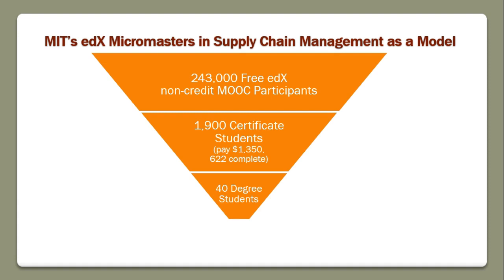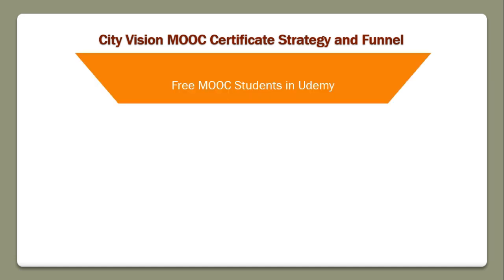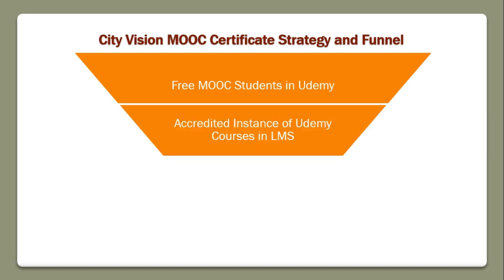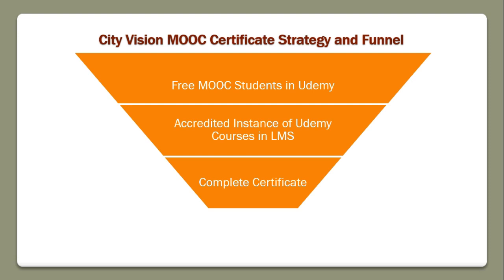We're trying to do the same type of thing but working with Udemy, so we have free MOOC students on Udemy — we'll probably have about 10,000 pretty soon — and then we have an accredited instance of the Udemy course in our learning management system. We use Populi, so students who are in Udemy are not getting credit, but you could sign up and take the accredited instance in our LMS. We're trying to use this as a model for other schools, and students can complete a certificate program of four courses and then potentially go on to our degree program.